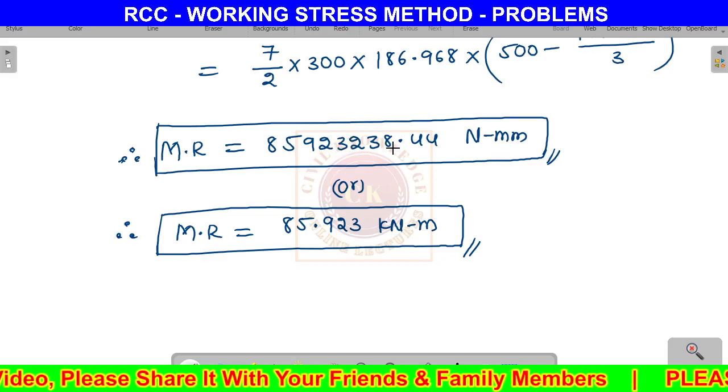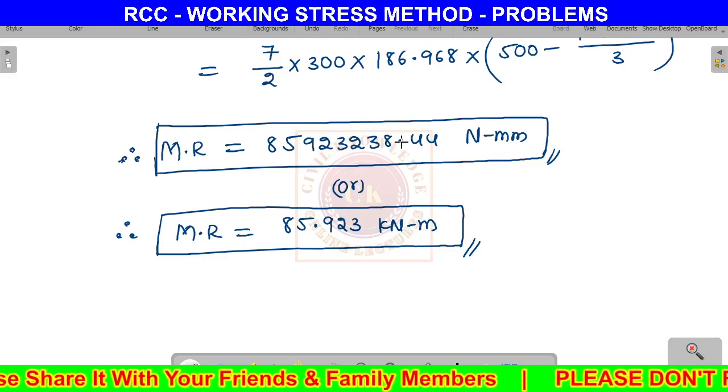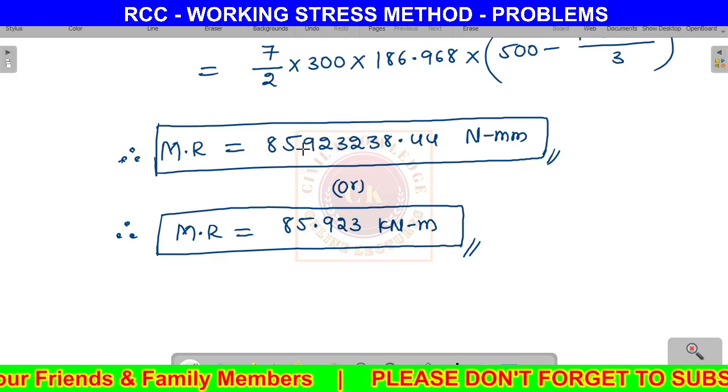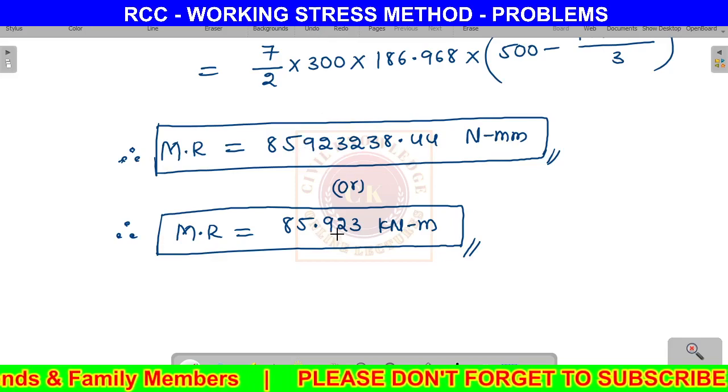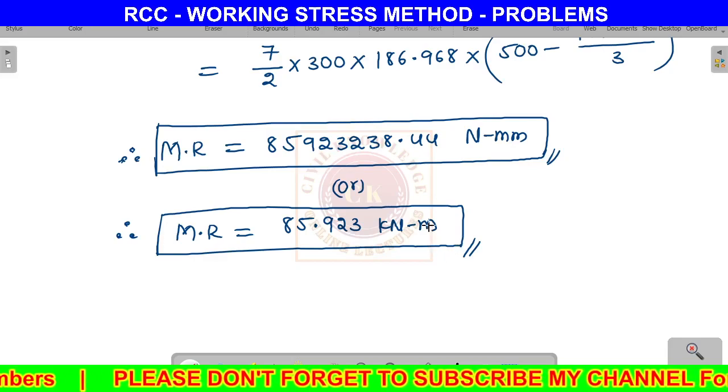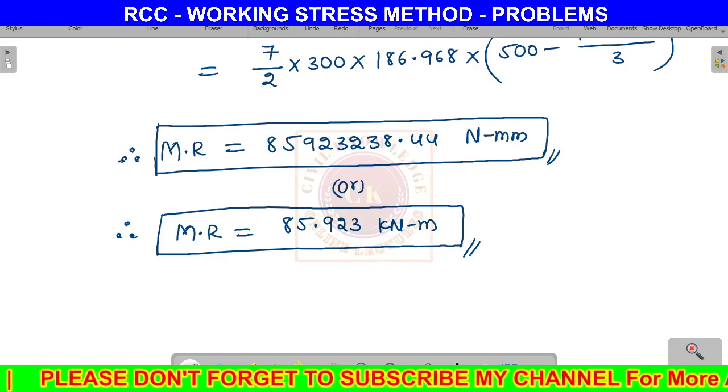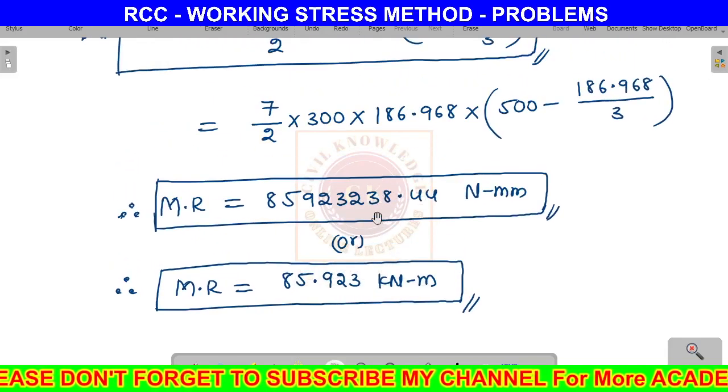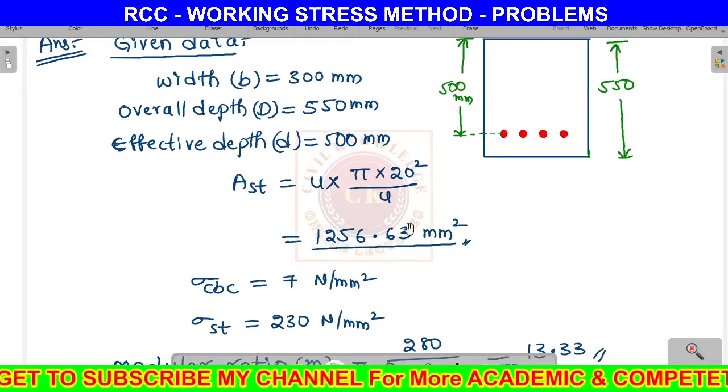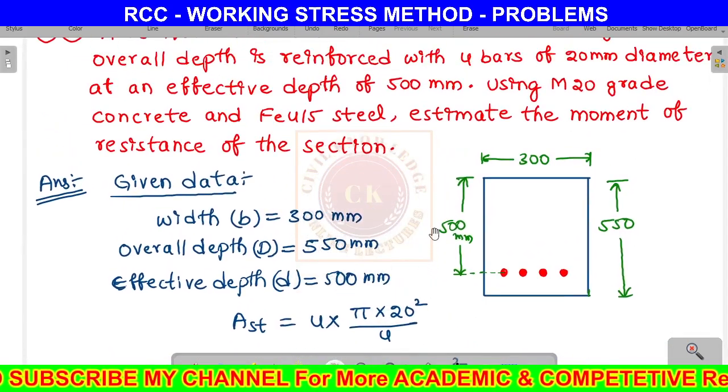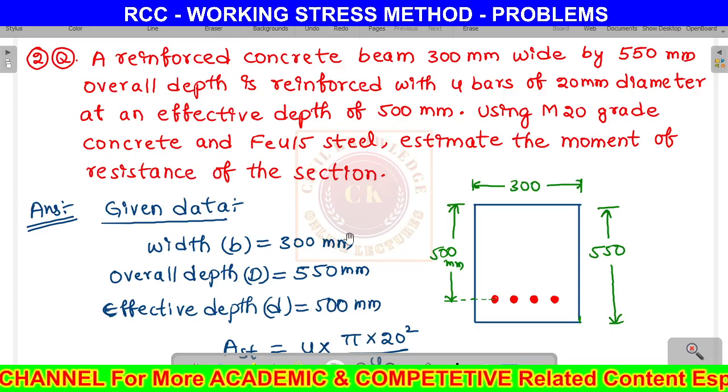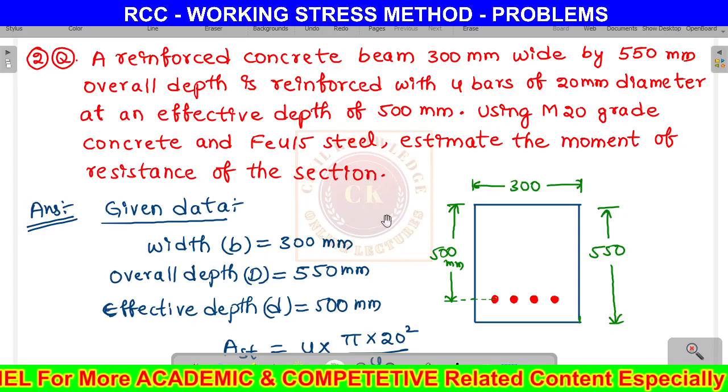The moment of resistance equals 85.923 kilonewton meter. This is a very important problem. Please like, share, comment, and subscribe. Thank you for watching this video.